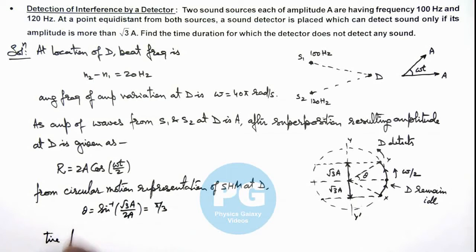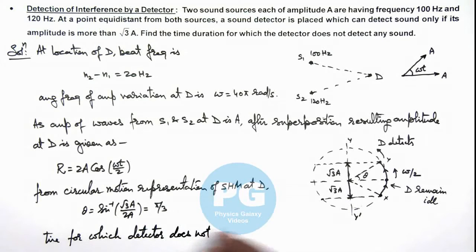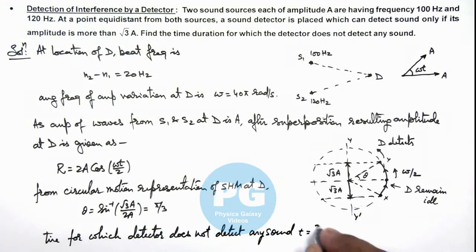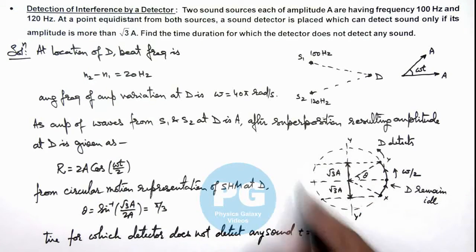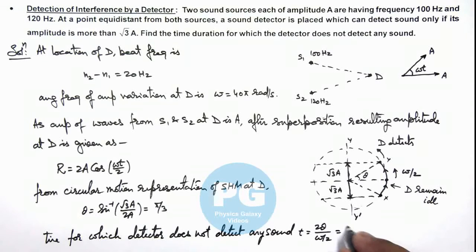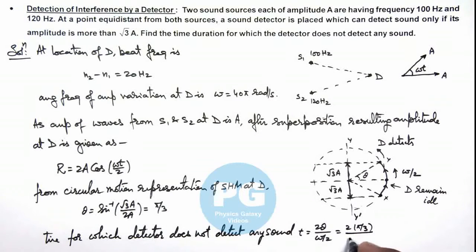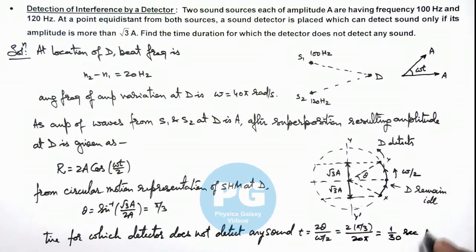So the time for which the detector does not detect any sound can be given as 2θ divided by ω/2, since the angular frequency of oscillation at the detector is ω/2. This gives us 2×(π/3) divided by ω/2. Since ω = 40π, this can be written as (2π/3) / (20π), which simplifies to 1/30 seconds. That is the result of this problem.